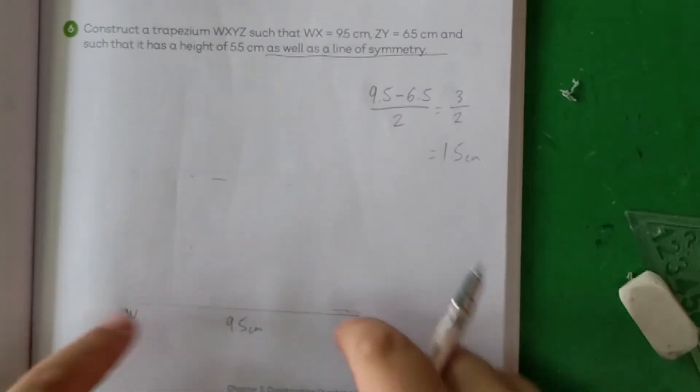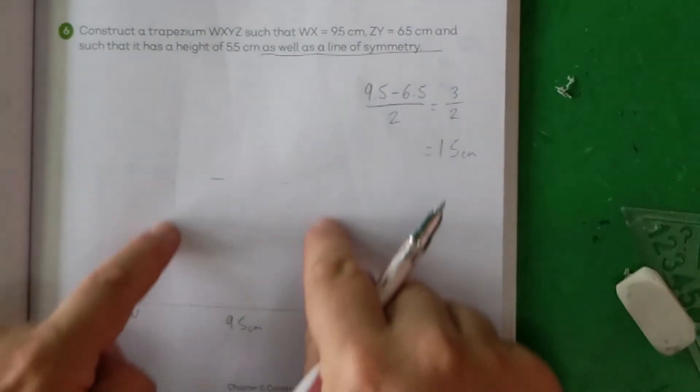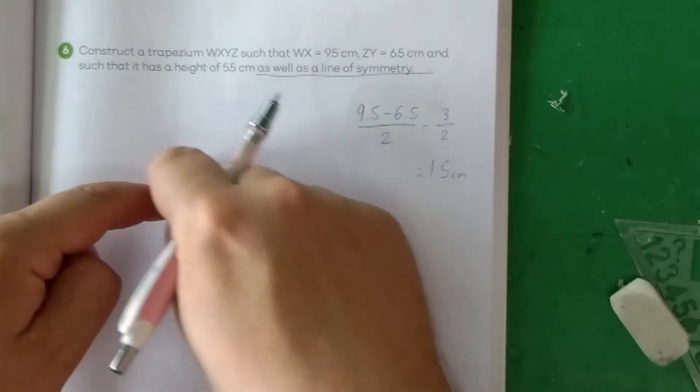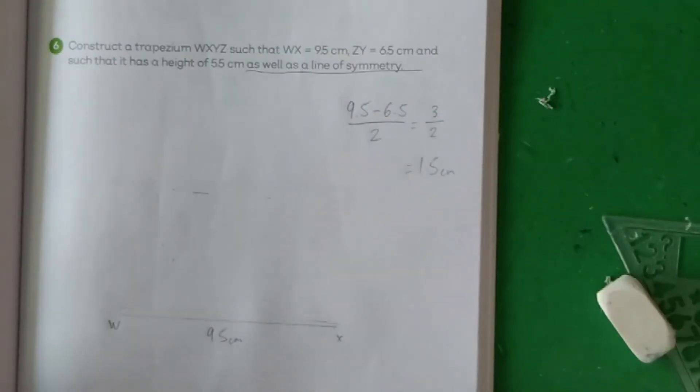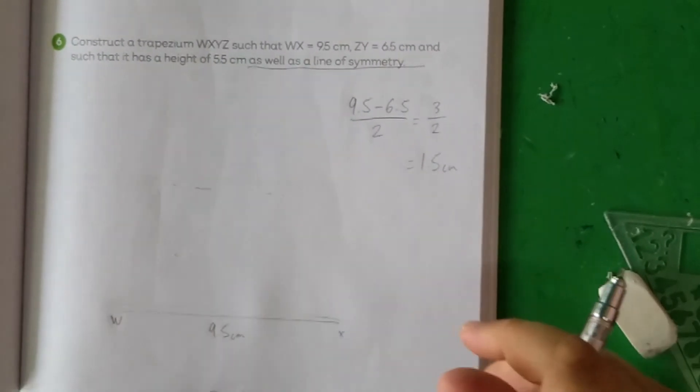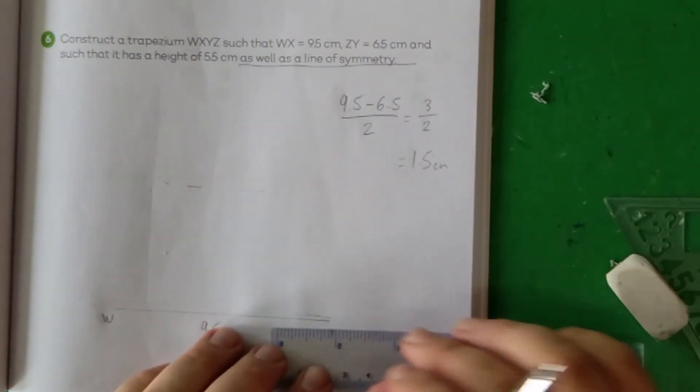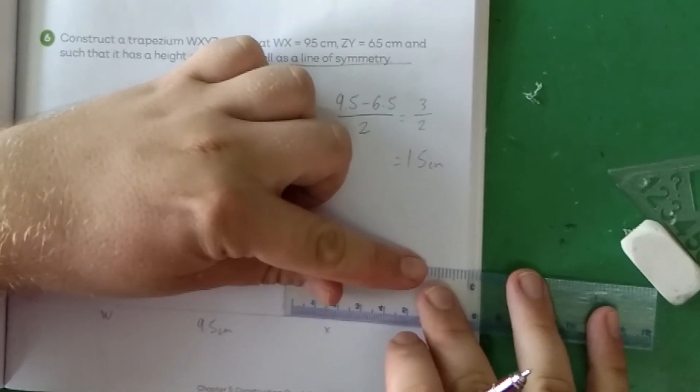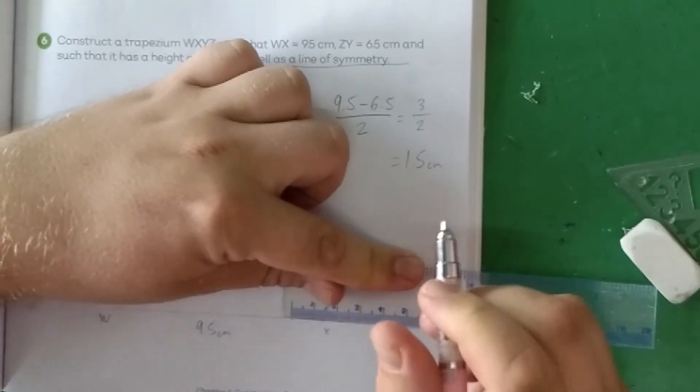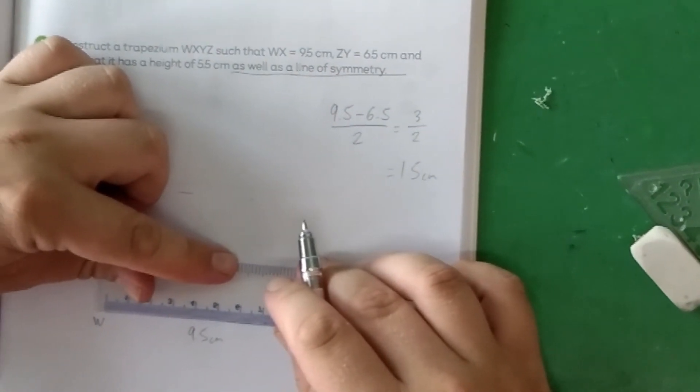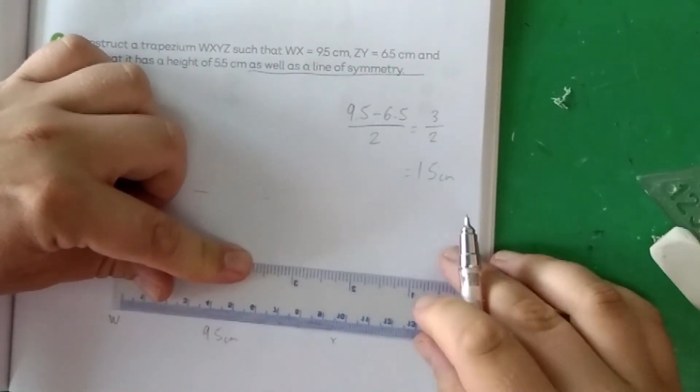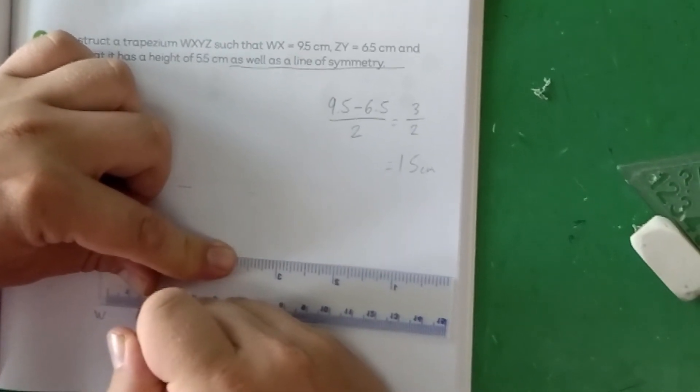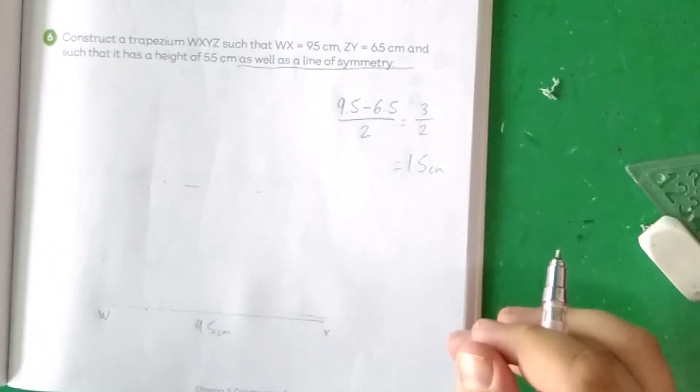There's going to be a space here that's going to be equal on both sides, which is the difference between the lengths of these lines divided by 2. Let's just quickly do that sum. 9.5 minus 6.5 over 2, or 3 over 2, which equals 1.5 centimeters. I'm going to erase my sketching here. Basically, how we can construct this is we can essentially make a rectangle in the middle with a length of 6 that's 1.5 centimeters in and then we can measure 5.5 centimeters up in height.